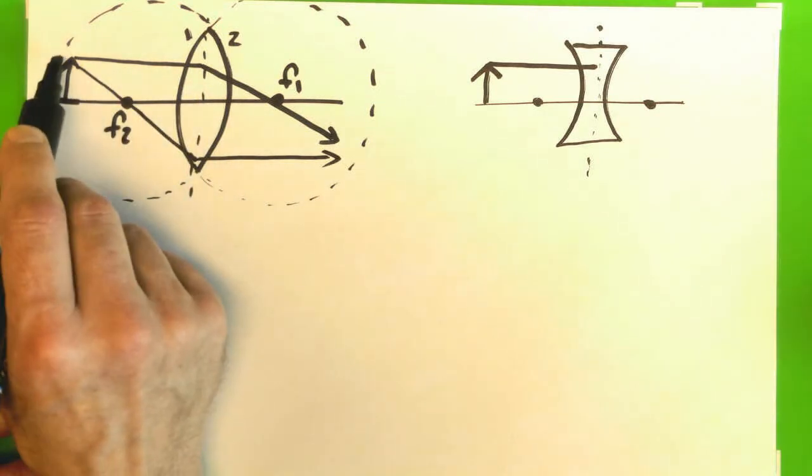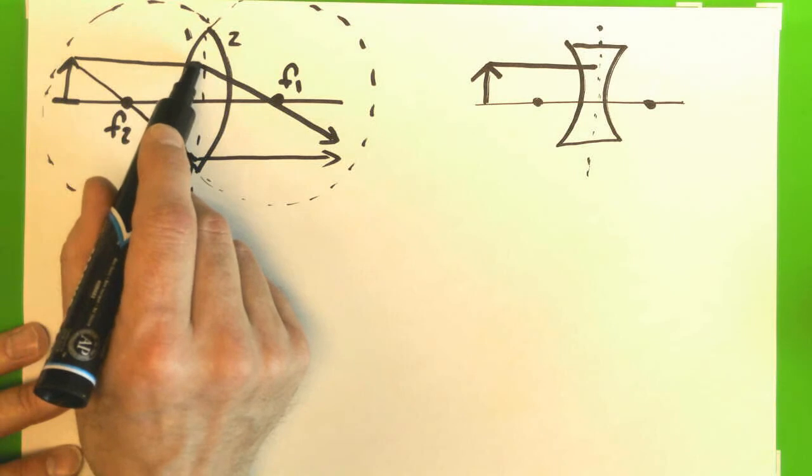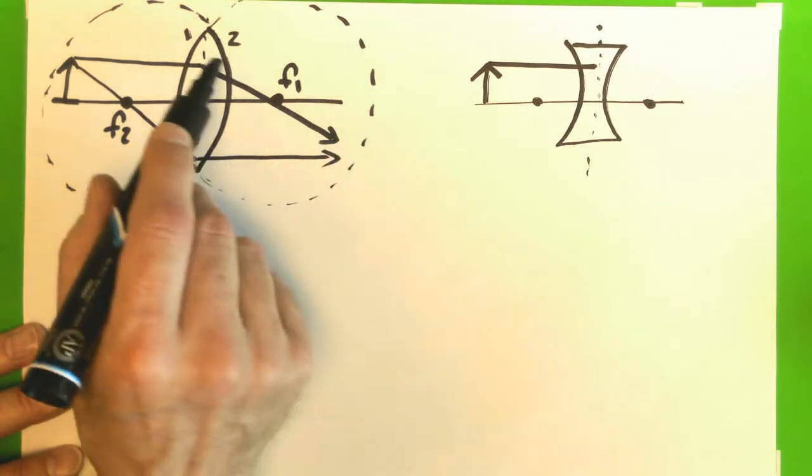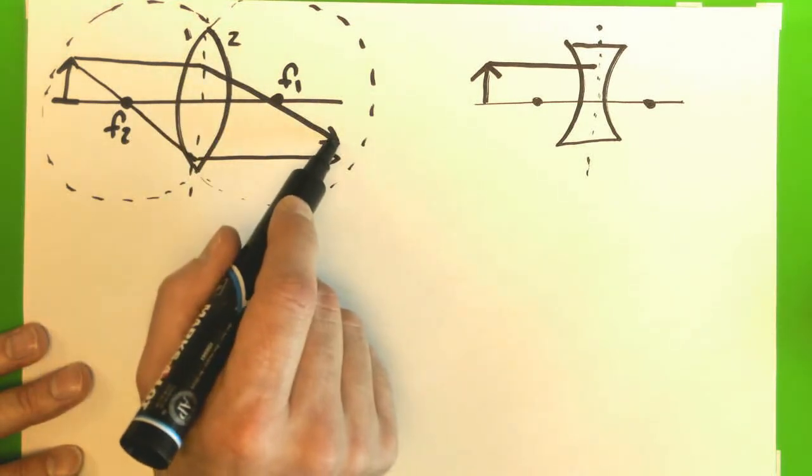the first focal point is on the other side of the lens as the object, so the light, the parallel light, goes this way and continues to go this way, and so in this case it's going to go through that focal point.